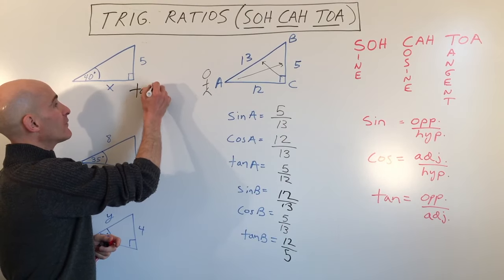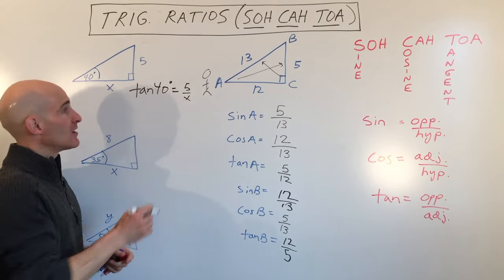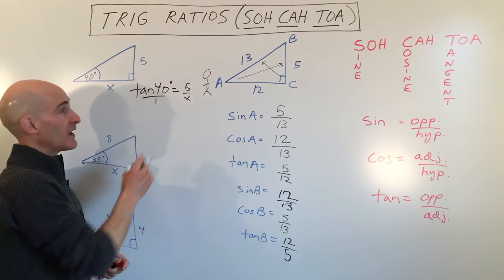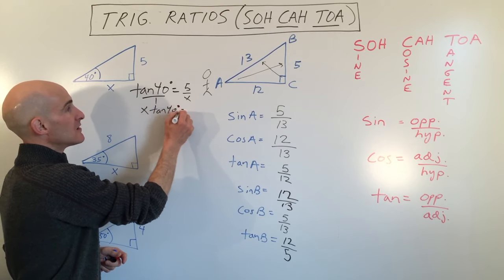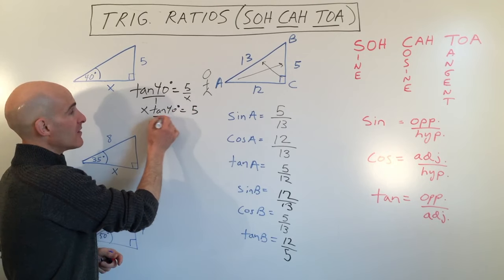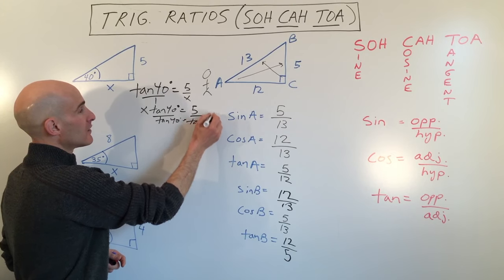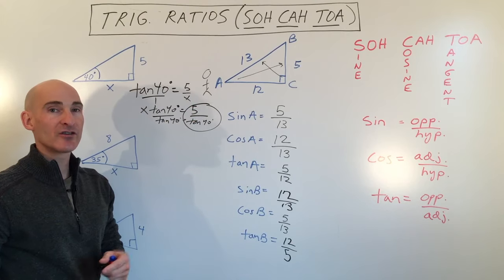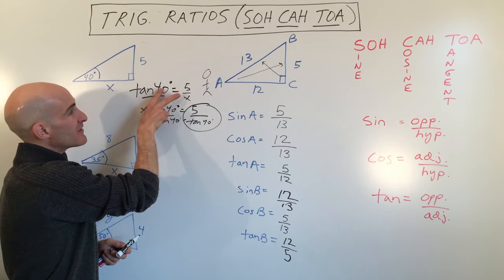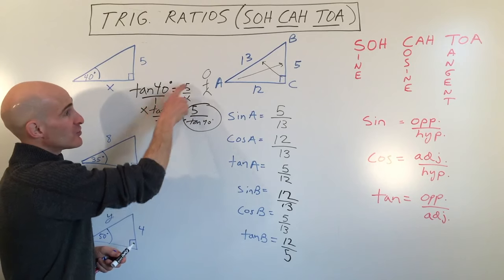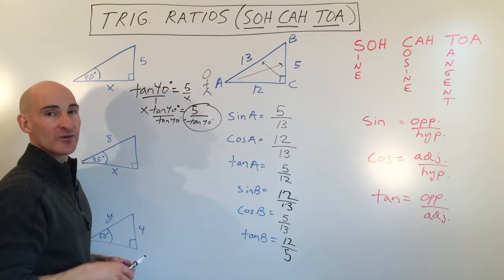So we set up: tangent of 40 degrees equals the opposite over adjacent, which is 5 divided by x. Cross multiplying gives x times tangent of 40 equals 5. Dividing both sides by tangent of 40 gives the exact answer. A quick tip: you can switch the terms on the diagonal in a proportion, which saves a step — putting x in the numerator right away.